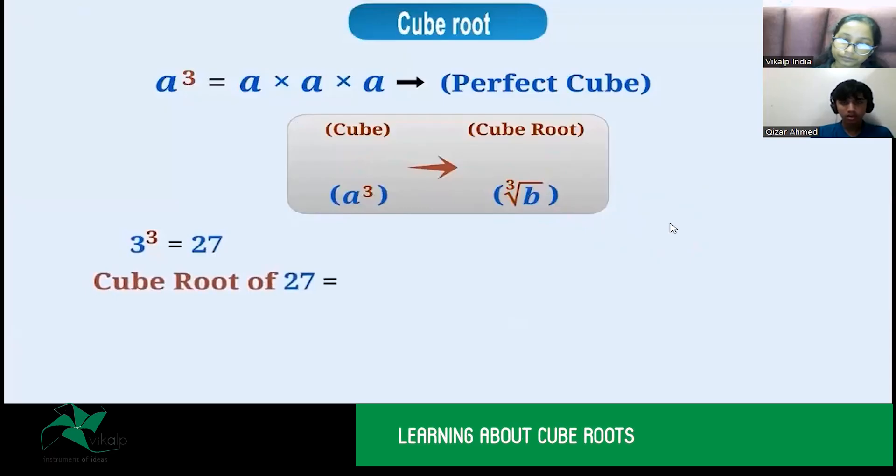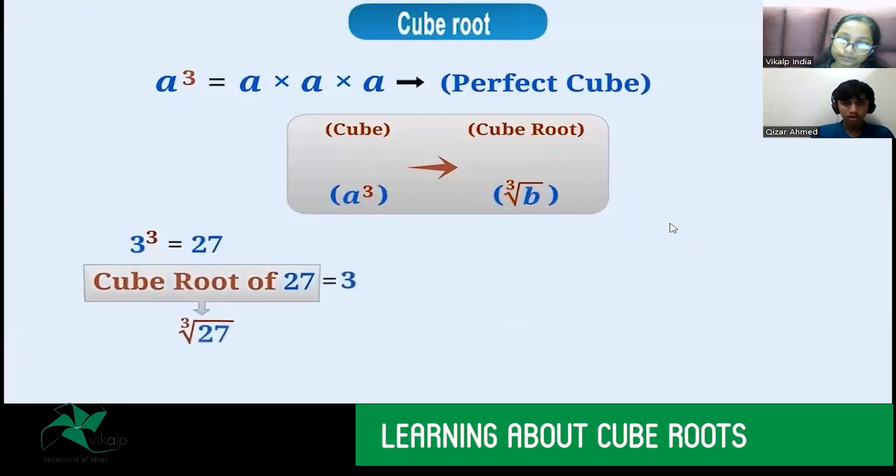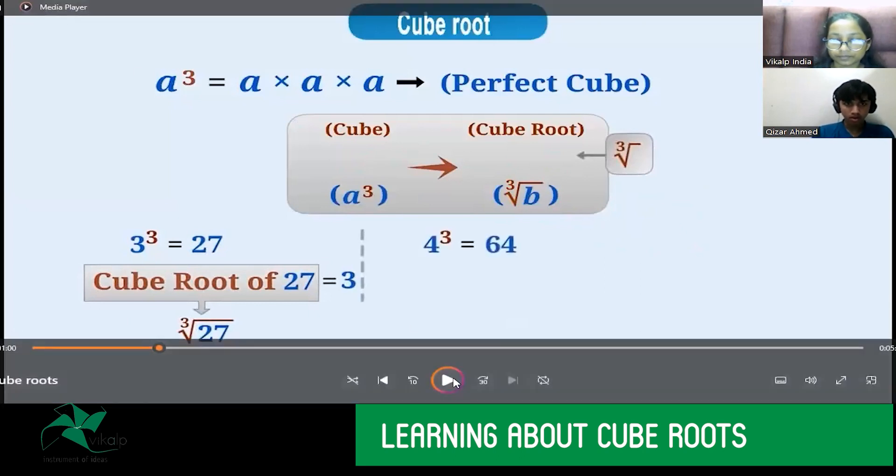Cube root of 27 is 3. And this is how we represent it. Keep in mind that this sign symbolizes cube root. Similarly, if we say that 4 cube is equal to 64. Now, if 4 cube is 64, what will be the cube root of 64?